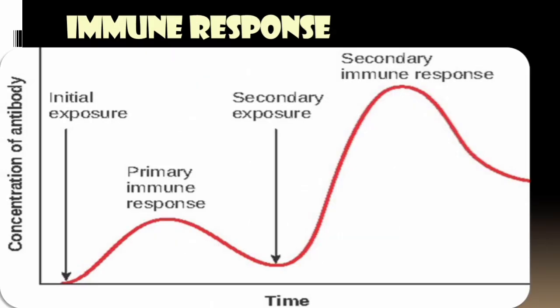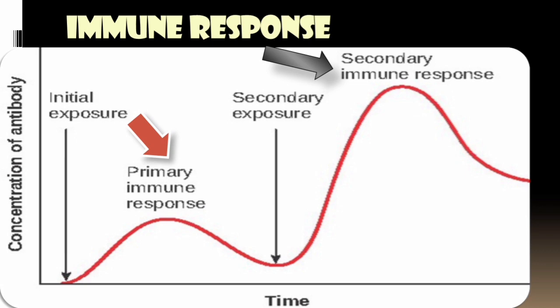Next, we need to understand immune response. There are two types: primary immune response and secondary immune response. When an antigen enters our body, our body reacts — that is the primary immune response. After that, memory is formed in B cells and T cells. The next time there is any secondary exposure, the peak goes up — that is the secondary immune response.